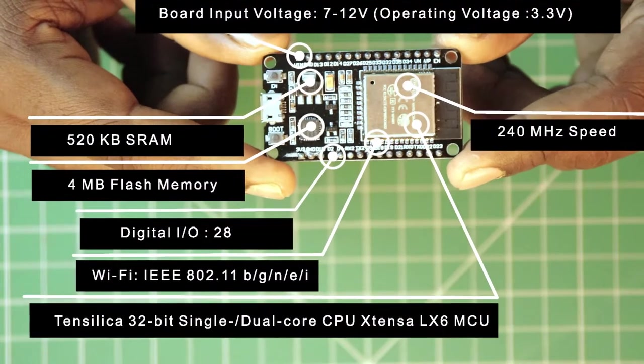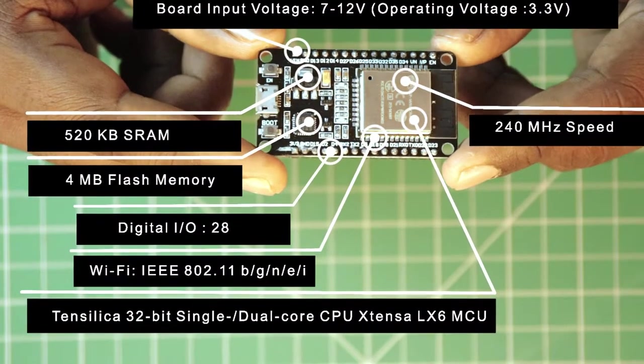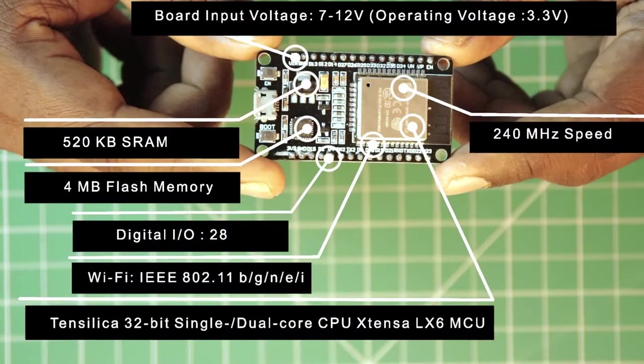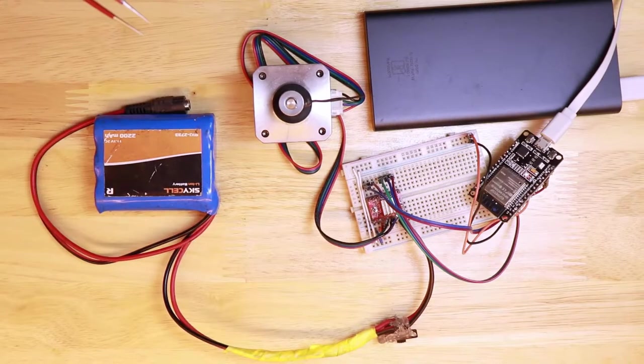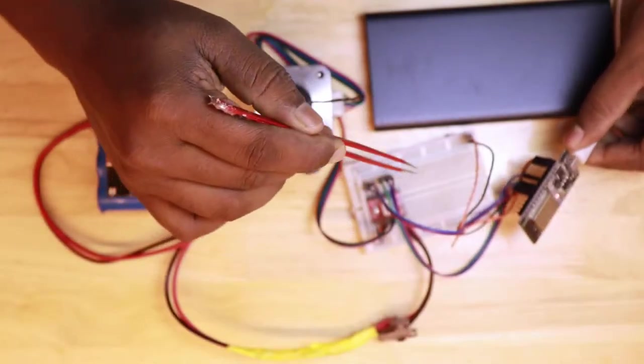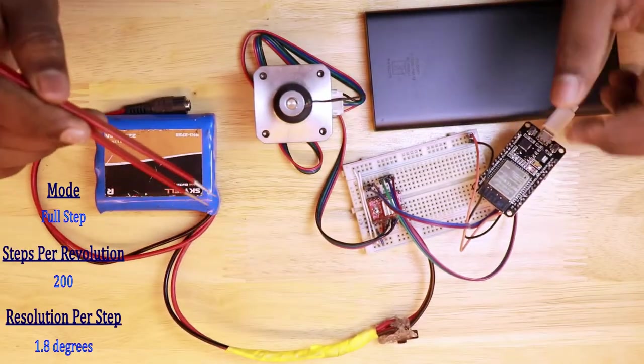It has a dual-core CPU, 520 KB of RAM, Wi-Fi, Bluetooth and a ton of other features. Alright, I have replaced the switch with the microcontroller. Let's see how to do it using the micro-stepping modes of the motor driver.